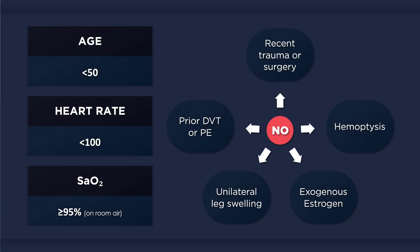If all eight criteria are met, then the risk of pulmonary embolism is sufficiently low that no further testing is required. Indeed, additional testing actually presents an equivalent or greater risk to the patient than the risk of a misdiagnosis. Thus, neither D-dimer measurements nor imaging studies are recommended for patients in a low-prevalence setting who meet all the PERC criteria.